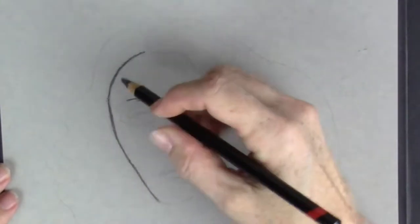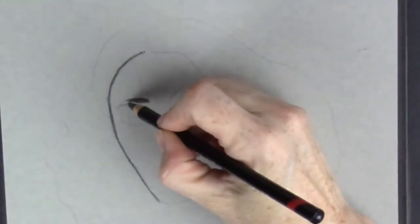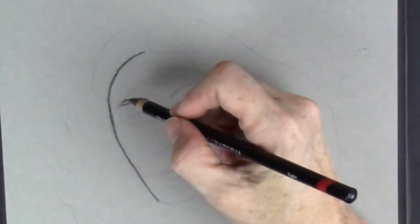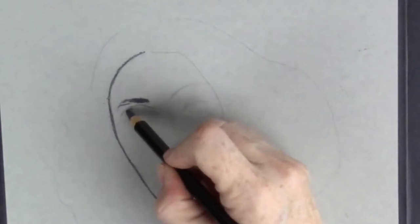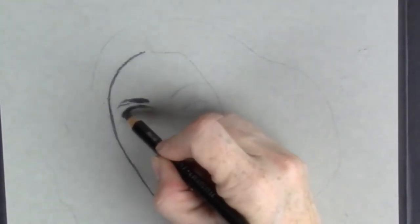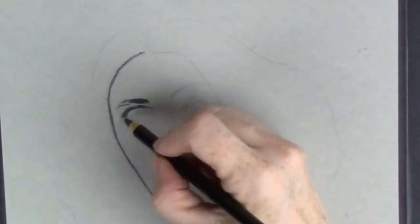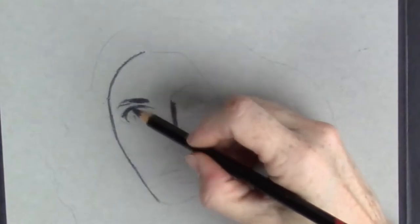To begin, I'm just going to follow my sketch marks and get in the basic proportions of the model's face. I'm using the light charcoal pencil to begin with, and I'll use the darker charcoal pencil as I establish some of my darkest darks.